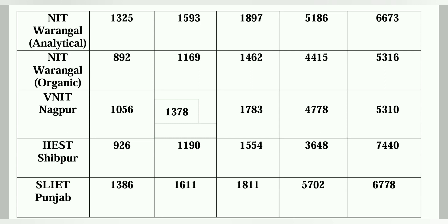Summary: EWS category students जिनका rank 2200 के अंदर है उन्हें at least कोई न कोई NIT मिल जाएगा। General category में जिनका rank 1800 या 1900 के अंदर है उन्हें कोई institute मिल जाएगा। OBC के लिए जिनका rank 2600 या 2700 के अंदर है उन्हें भी at least कोई institute मिल जाएगा।